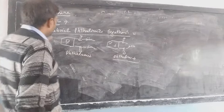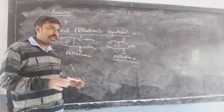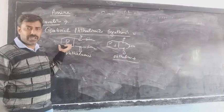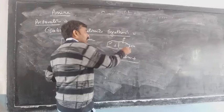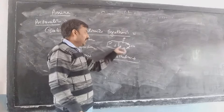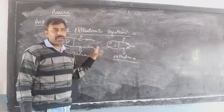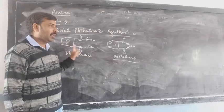When we go to the next preparation, that is the Gabriel phthalimide synthesis. This reaction is only used for the preparation of primary amine. Secondary and tertiary amines cannot be prepared by this reaction. Because in phthalimide, nitrogen is already combined with two carbons, and those bonds are not going to break. This is why secondary and tertiary amines cannot be prepared by Gabriel phthalimide synthesis. Also, aromatic primary amines cannot be prepared by this process — only aliphatic primary amines.